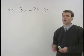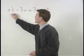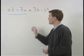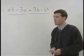To factor this problem, we can group the first two terms together, AB minus 3A, and the last two terms together, positive 3B minus B squared.